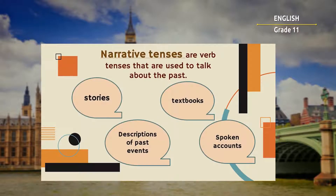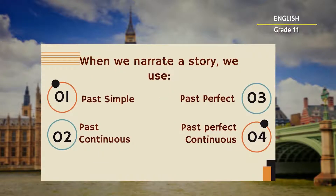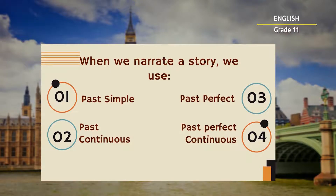Narrative tenses are verb tenses that are used to talk about the past. You can often find them in stories, textbooks, spoken accounts, and in descriptions of past events. Therefore, it's very important to know the past verb forms and use them correctly. When we narrate, we use the past simple tense, the past continuous tense, the past perfect, and the past perfect continuous tense.